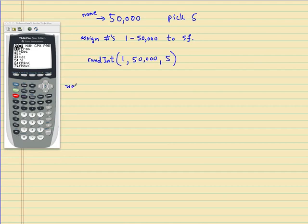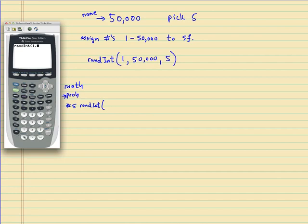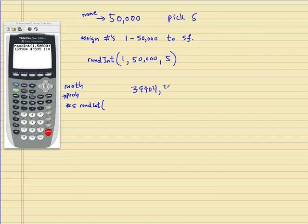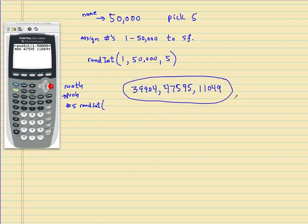Enter randint(1, 50000, 5) — don't put a comma in 50,000. The calculator gives us our five numbers. Whoever had those numbers, like 39904, are the lucky winners and are in our sample. We would then go measure or ask them something.